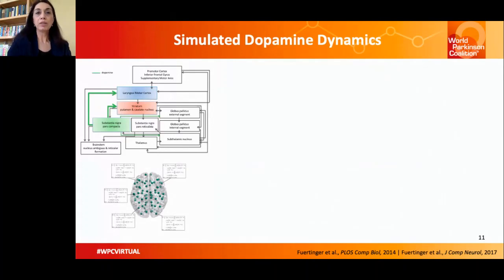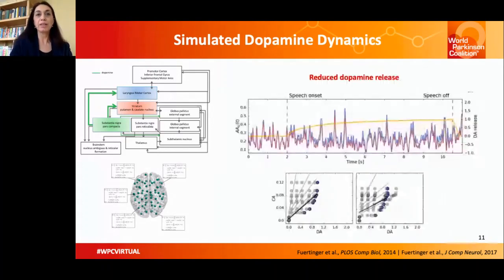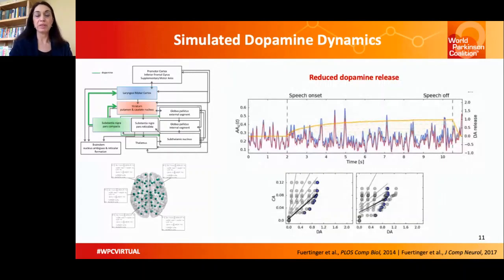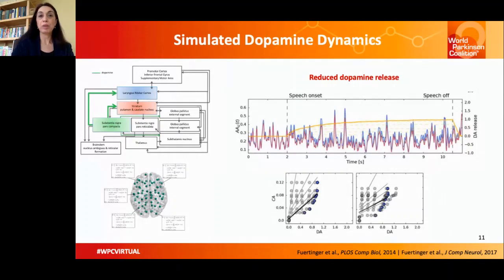We found that stepwise decreases in dopamine release are highly correlated with cortical activity in the speech motor cortex and lead to dopamine-dependent decreases in activity. It is plausible that this ultimately leads to and translates to the disorganization of the entire network and is reflected in progressive worsening of speech symptoms in patients with Parkinson's.